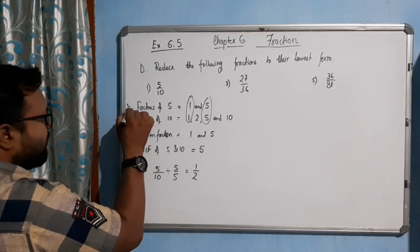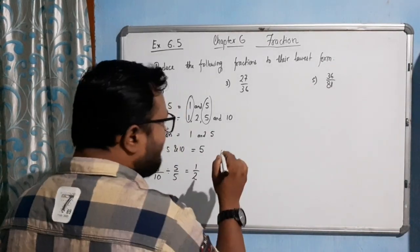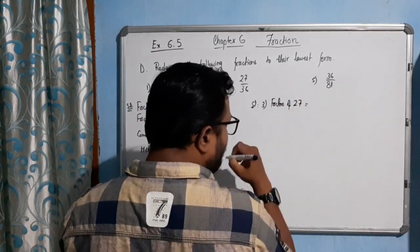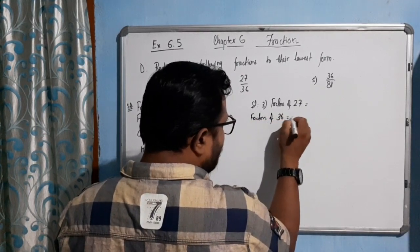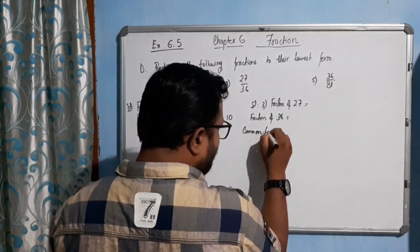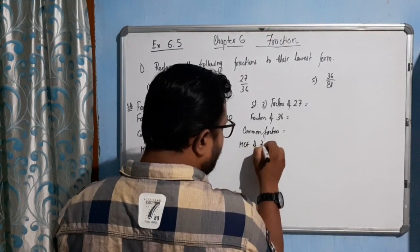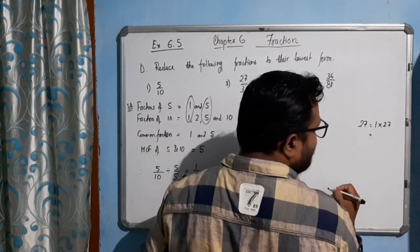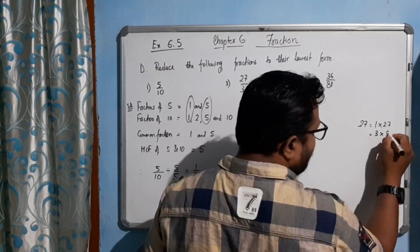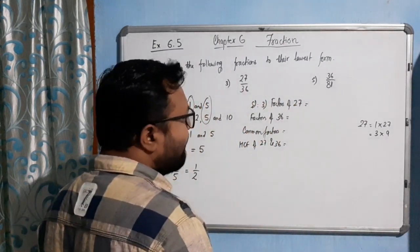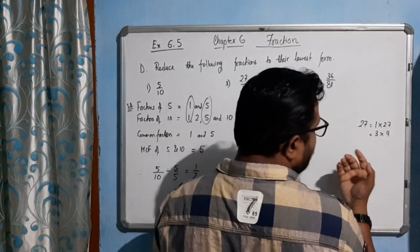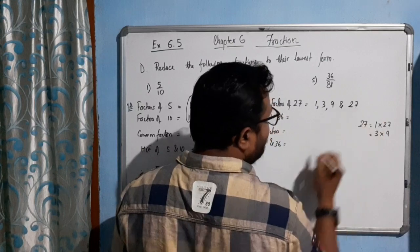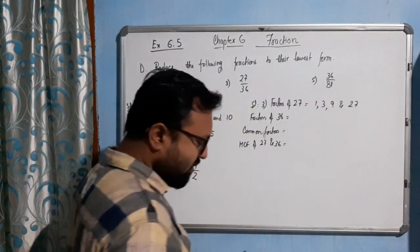Now question number 3. For solution 3, we will find the factors of 27 and factors of 36, then find common factors and the HCF of 27 and 36. For 27: 1 into 27, by 2 not possible, by 3 gives 3 times 9, by 4 not possible, by 6 not possible, by 7 not possible. So the factors of 27 are 1, 3, 9, and 27.